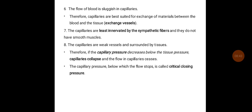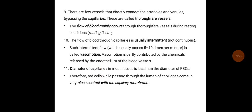The flow of blood is sluggish in capillaries; therefore, capillaries are best suited for exchange of materials between blood and tissue — that is why they are also called exchange vessels. The capillaries are least innervated by sympathetic fibers and have no smooth muscle. The capillaries are weak vessels surrounded by tissues, so if capillary pressure decreases below tissue pressure, the capillaries collapse and flow ceases. The capillary pressure below which flow stops is called the critical closing pressure.